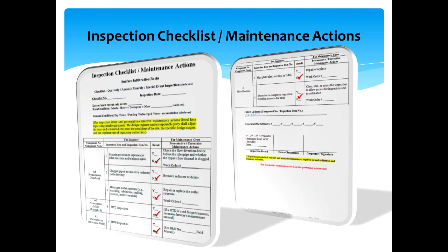The inspector first fills out information regarding the weather and ground conditions on the date of the inspection, then proceeds with the inspection in order of the items on the checklist. If there is an issue, the inspector may circle the preventative or corrective actions for the maintenance crew to follow up. After the inspection, the inspector signs the inspection checklist and provides it to the responsible party to be kept on record. The maintenance crew may further fill out assigned work orders to resolve the issue. A regulatory entity may also use the inspection checklist in the field manual to conduct its own inspection.